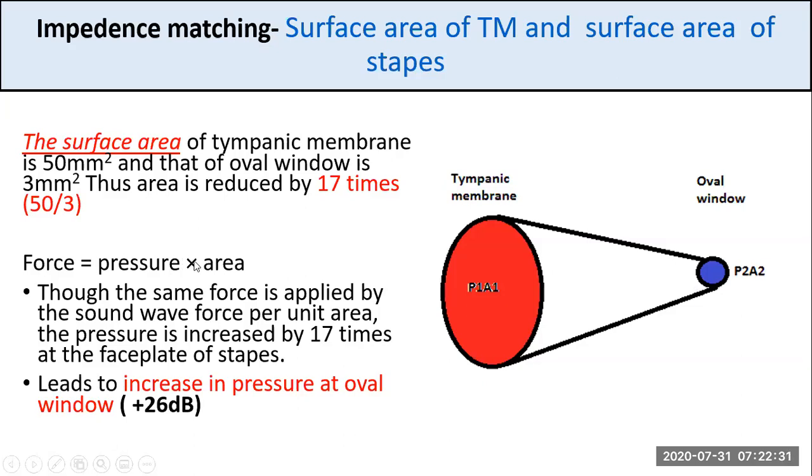As we know, force is pressure times area. So when sound impinges on the tympanic membrane with a given force, it is transmitted to the stapes at the footplate because the area is smaller. For the same force, the pressure is much higher as the area is smaller. The same force is applied by the sound wave force per unit area. The pressure is increased by 17 times at the footplate of the stapes at the oval window because the area is reduced by 17 times. This area difference leads to an increase in pressure at the oval window by about plus 26 decibels.